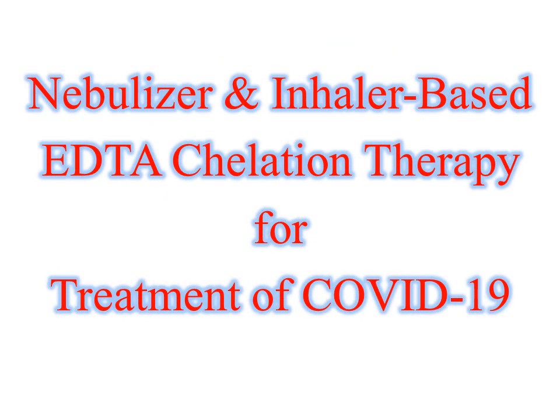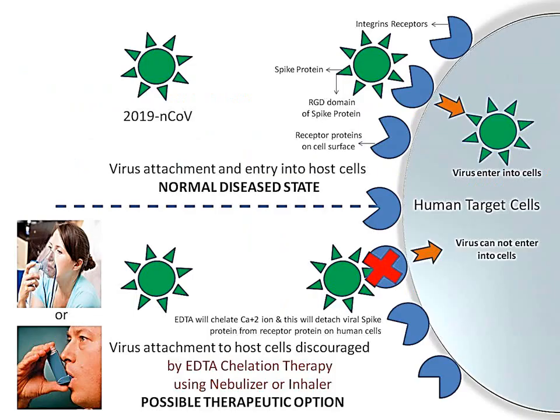I propose nebulizer and inhaler-based ADTA chelation therapy for the treatment of COVID-19, wherein ADTA will be allowed to pass into the lungs through a nebulizer and inhaler. ADTA will chelate these divalent ions in the lung cells, making them unavailable for RGD-mediated virus attachment with the host cells. I believe that in the absence of divalent ions such as calcium and magnesium, spike proteins of the virus would not be able to attach to lung cells, and in this way we can prevent infection and attain a state of protection against these viruses.